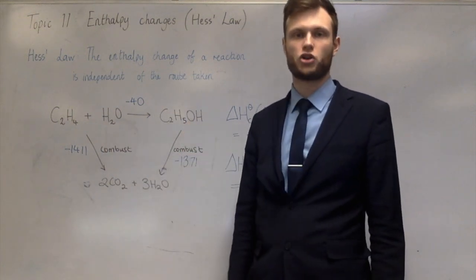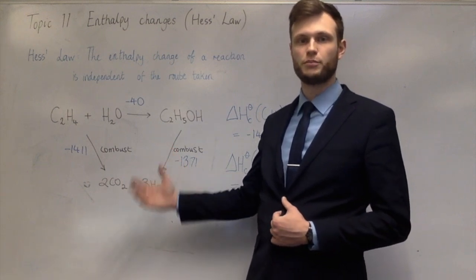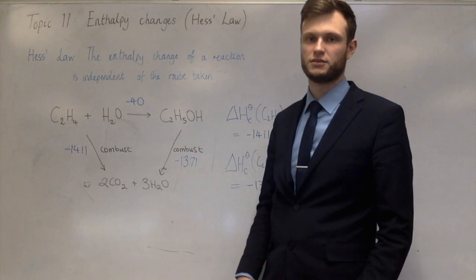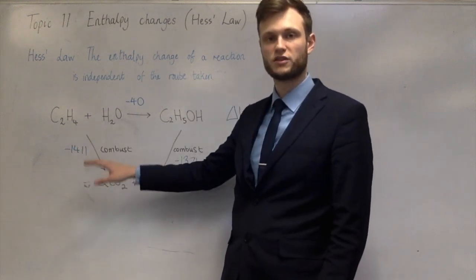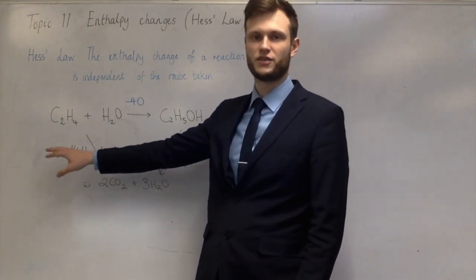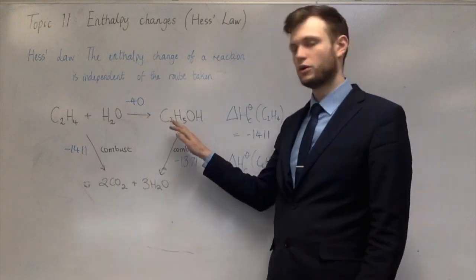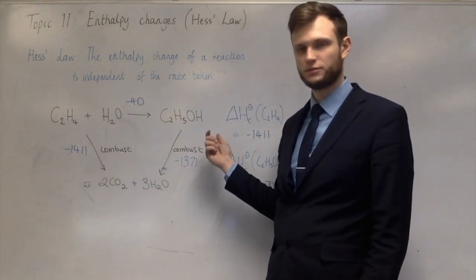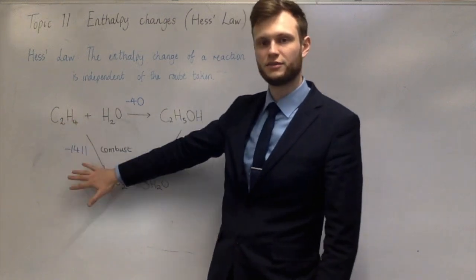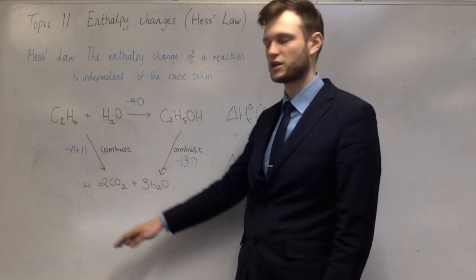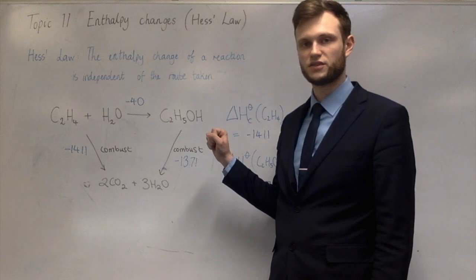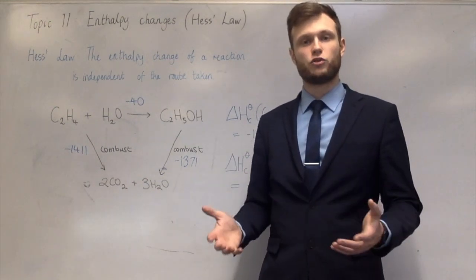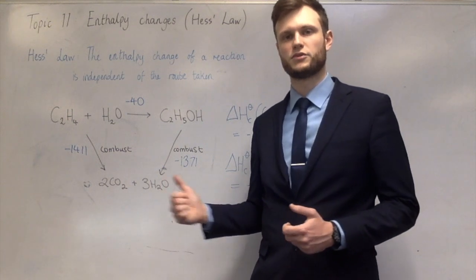Doing Hess's law calculations with combustion data: you combust both sides, write down all the numbers corresponding to the substances burned on the left-hand side as negatives, and all the numbers for the chemicals burned on the right-hand side as positives, then press equals. Doing enthalpy changes with formation data is actually quite similar, so let's do one of those now.